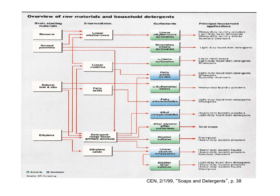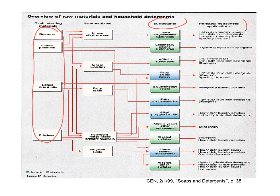This diagram shows how various hydrocarbons are used to make soaps, and also the principal applications. The different soaps have different properties, and that determines the applications.